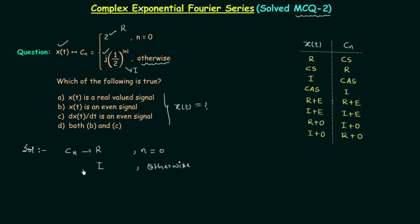Now we will find whether CN is even or odd, and for this we will perform the reversal operation — we will find C(-N). If you see the definition of CN, there is no n in the term when n equals 0, and there is mod n when n is not equal to 0. When you substitute n with -n, the definition does not change because mod(-n) is the same as mod(n). So C(-N) is the same as CN, which is the condition for a signal to be even. This implies CN is even in nature.